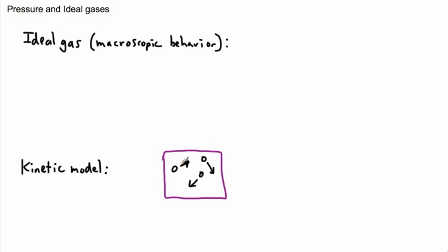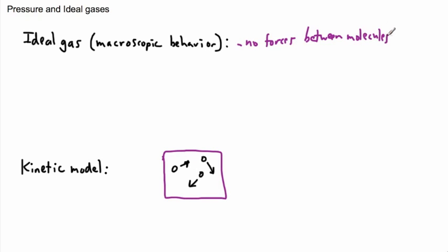In real life, gases are much more complex, so we simplify by using ideal gases — easier to work with. We consider things on a macroscopic scale and assume the molecules have no forces between them. In real life they do, but we pretend they're like billiard balls just bouncing off each other.